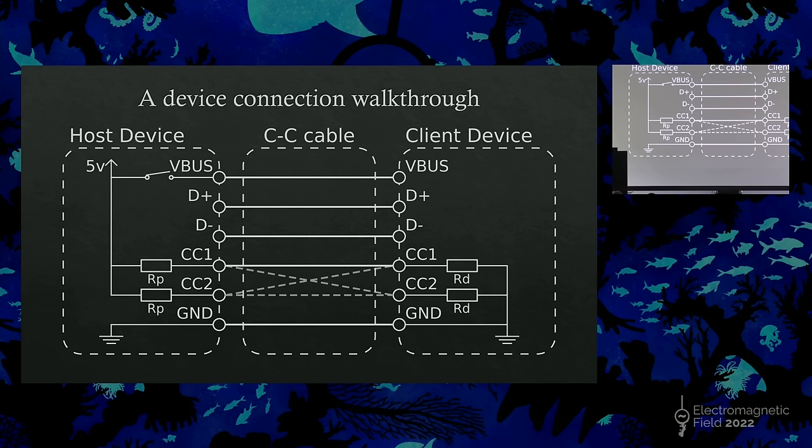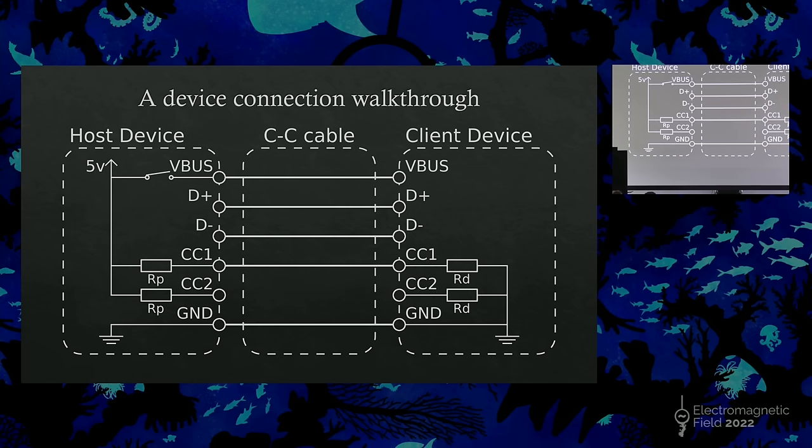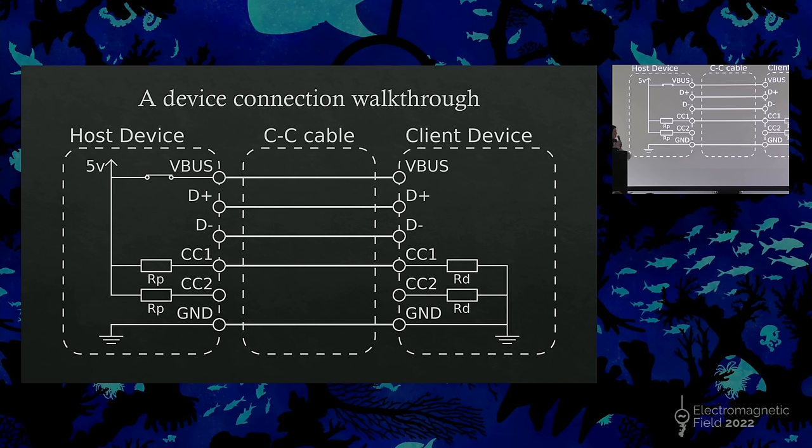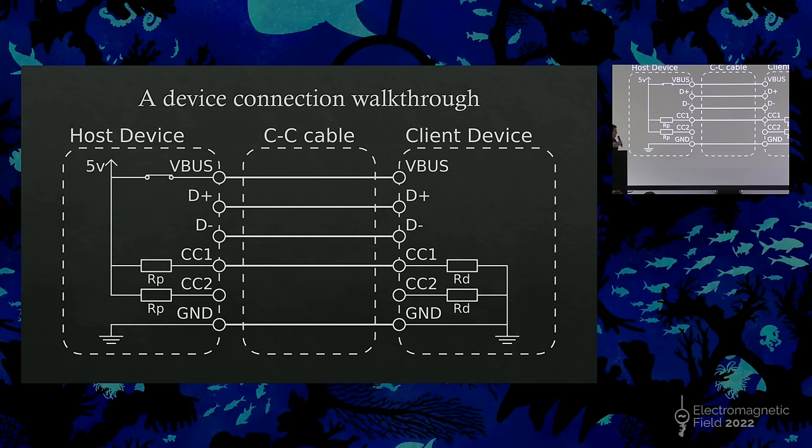When we connect them together, you've now got a potential divider between the RP in the host, and the RD in the client. However, it's worth noting that because the cable can be flipped at either end, you can actually end up with any of the CC pairs being connected together. In all these diagrams, I've always used CC1 to CC1 for convenience, but in reality, any one could be connected to either of the others. So once it has connected across the thing, it detects the thing with them, and it can then enable the power connection.